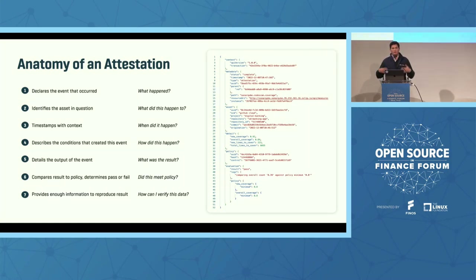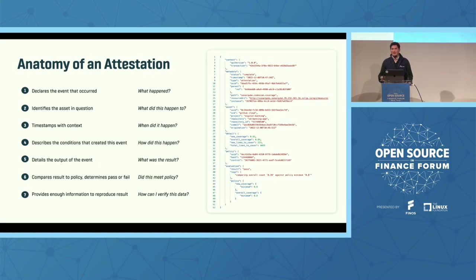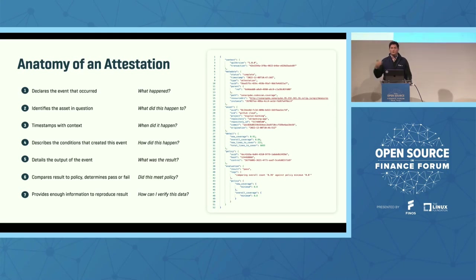A lot of what we're talking about today revolves around attestations. The attestation declares what event occurred, identifies the asset in question, and timestamps with context so you know what happened and when — for example, that a code scan began or completed. It describes the conditions surrounding the event: the environment variables when that event occurred, details of the output such as a vulnerability report from a SAST scan, the comparison of results to policy to determine pass or fail, and enough information to reproduce that event. All of those pieces stored in each attestation provide the confidence needed for automated decisions.